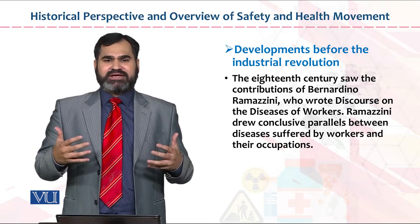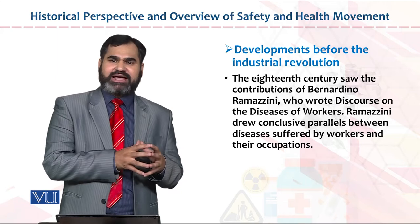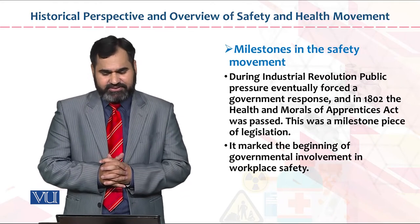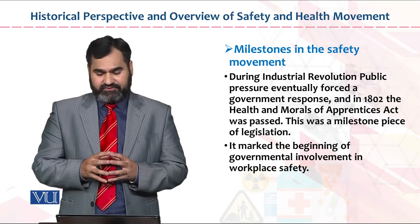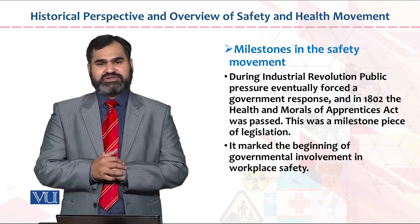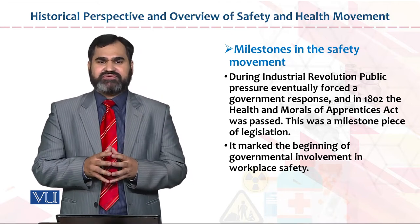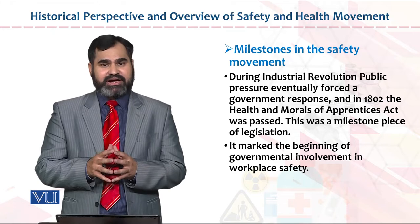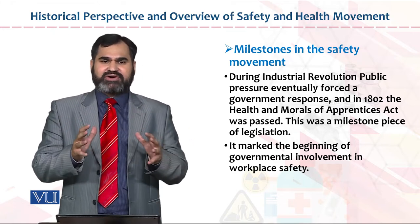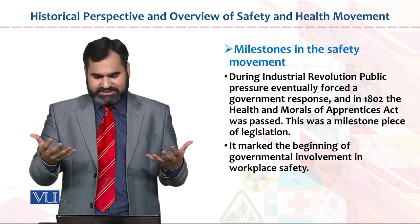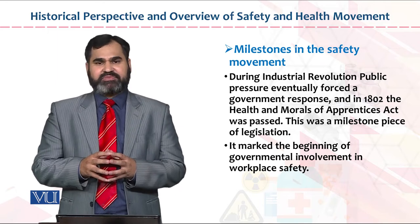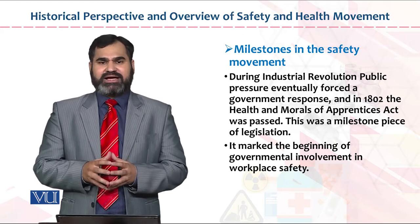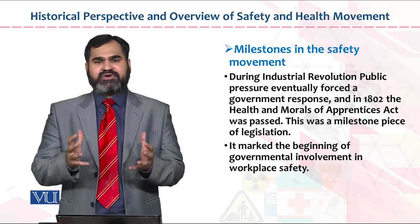Workers definitely need some protective mechanism — particular protective clothing they must wear while working in that environment. This development occurred before the industrial revolution. During industrial revolutions, public pressure eventually forced a government response. In 1802, the government began passing legislation regarding the working environment and gave directions to organizations on how to improve their work settings, marking the beginning of governmental involvement in workplace safety. After government involvement, workplace safety improved significantly.